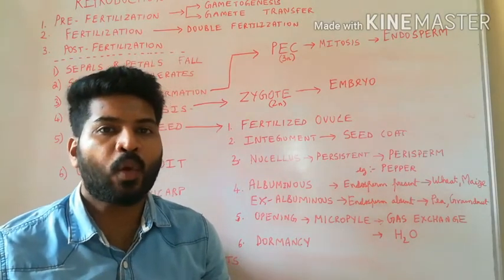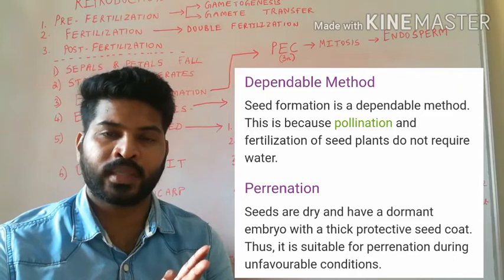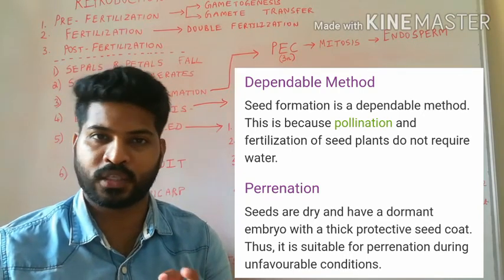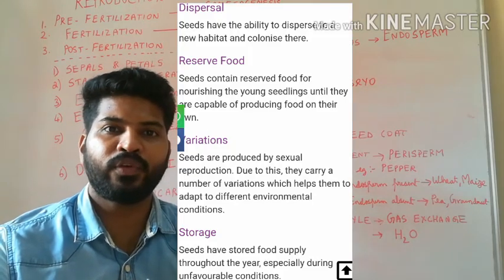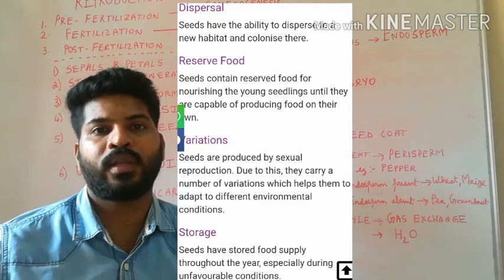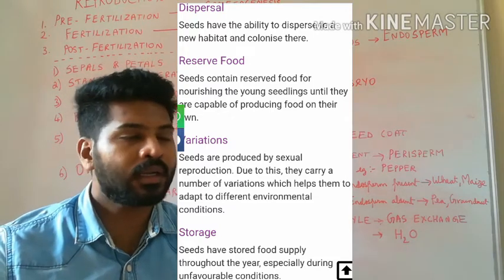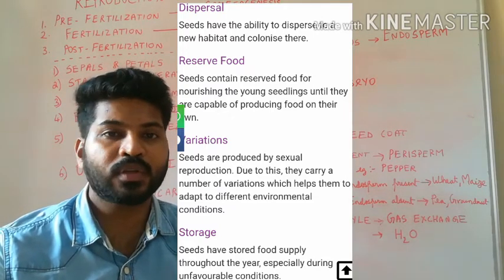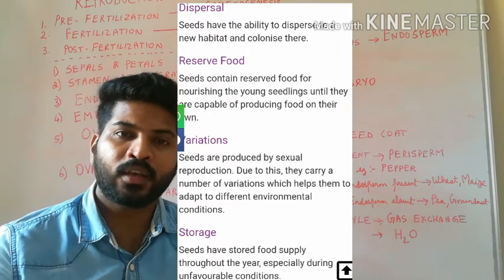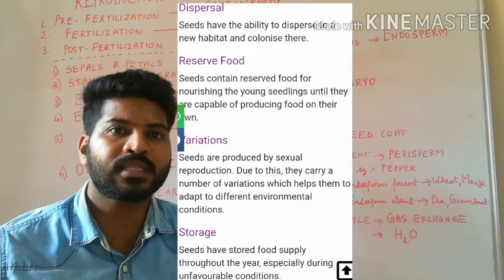Seeds offer various advantages to an angiosperm plant. First, seeds are well protected by the seed coat, which can withstand temperature, high water content, high soil content, etc. — it can withstand unfavorable conditions. Second, seeds have enough nutritive tissue to help in the development of the embryo as well as once the embryo germinates. Additionally, seeds have developed different types of dispersal mechanisms by which they can be transported by wind, water, animals, etc., allowing them to colonize newer habitats where they can grow and create a new population.